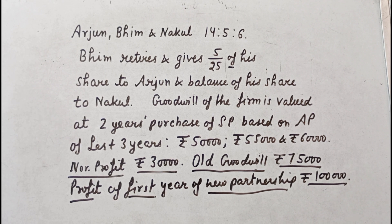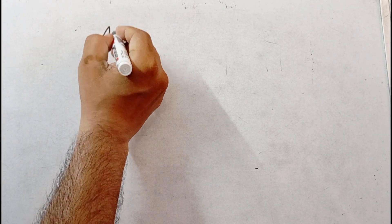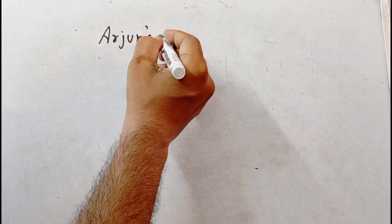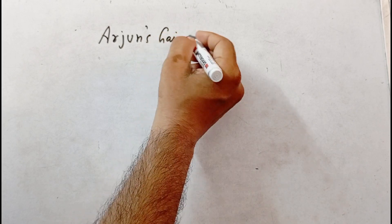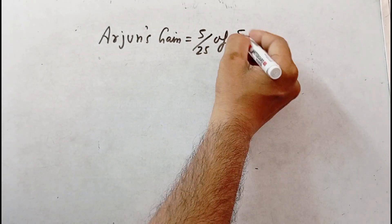In this question, the new profit-sharing ratio is very necessary. The gaining ratio is also very necessary. The goodwill value on Bhim's retirement will be adjusted. Before we start, we need to find the new profit-sharing ratio and gaining ratio of the partners, and then value the goodwill of the firm. Then we will have all our entries together.